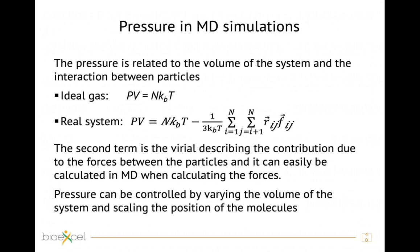Pressure in simulation is calculated differently. From ideal gas theory there is a relation between pressure, volume, number of particles, and temperature. For a real system, a second term is added — the virial — describing the contribution from the forces acting on the particles and their positions. One way to control pressure in molecular simulation is by scaling the positions of the molecules, thereby scaling the volume of the box.